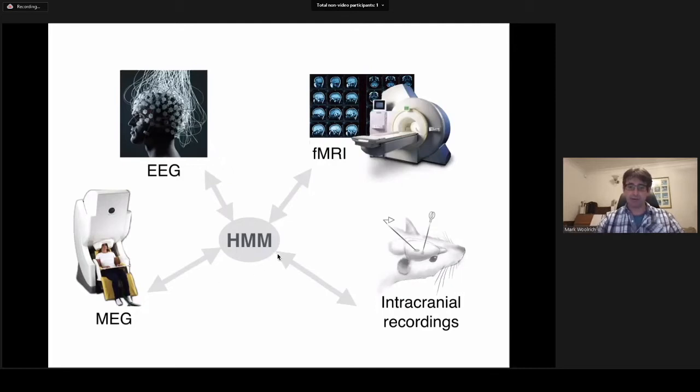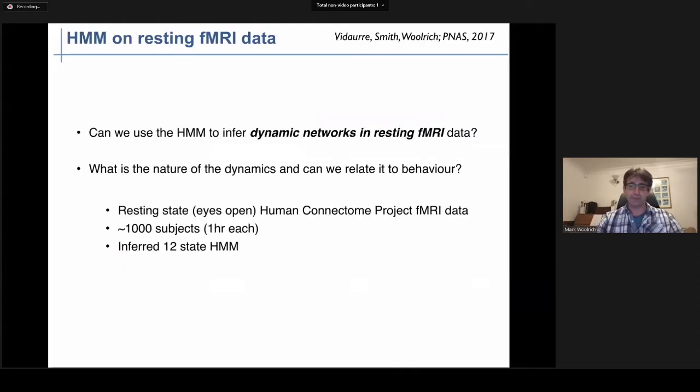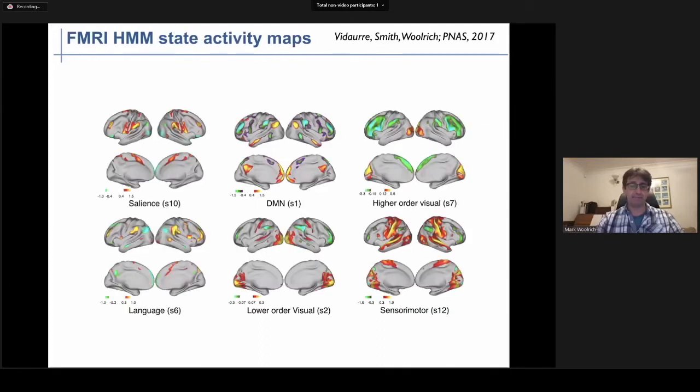So we can use the HMM on different types of data. It's very flexible. Today, I'm going to talk about non-invasive neuroimaging data and start with an application in fMRI. We're going to try to use the HMM to go beyond this static perspective to see if we can infer dynamic networks in resting fMRI data and relate the dynamics to behavior. The first thing I'm showing you here are the spatial maps for six of the 12 states that we inferred on the Human Connectome Project resting state data. These show the same mix of primary sensory motor and cognitive networks that we're used to seeing in the resting state.